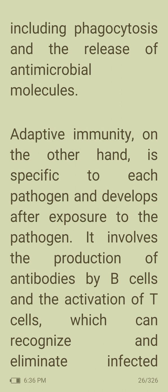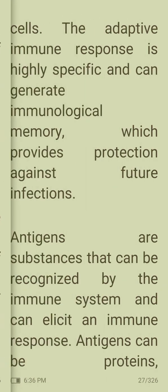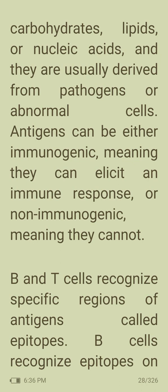Innate immune cells can recognize and eliminate pathogens via phagocytosis and release of antimicrobial molecules. Adaptive immunity is specific to each pathogen and develops after exposure. It involves the production of antibodies by B cells and the activation of T cells, which can recognize and eliminate infected cells. The adaptive immune response generates immunological memory, providing protection against future infections. Antigens are substances recognized by the immune system that can elicit an immune response.